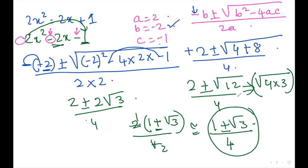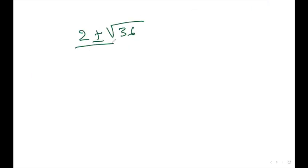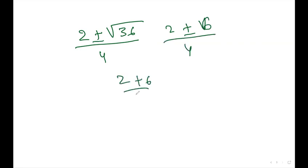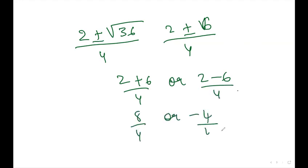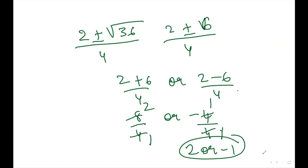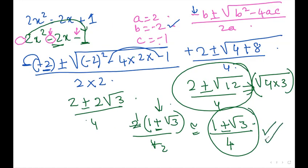For example, if the equation gives you 2 plus or minus the square root of 36, over 4, then you can directly solve: root of 36 is 6. So it becomes 2 plus 6 over 4, or 2 minus 6 over 4, giving 8 over 4 or negative 4 over 4, which is 2 or negative 1. ICSE and CBSE students can leave the answer in simplified surd form, but schools that allow calculators can compute the decimal value.